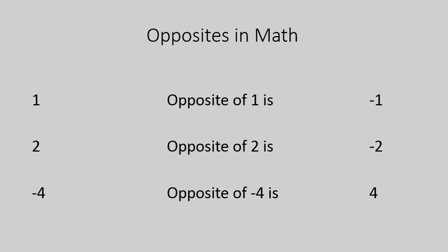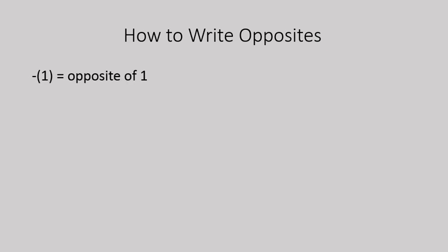The way that we write opposite in math is to put a negative sign in front of something. Here's an example: this is negative, and then inside the parentheses you have the number one. We would read this as the opposite of positive one — it's the opposite of one — and that is negative one.